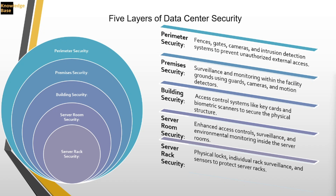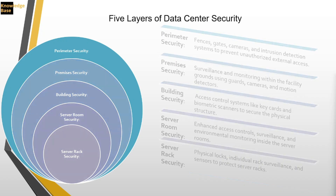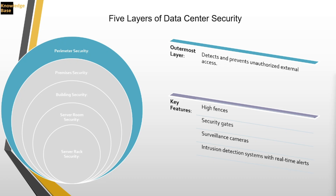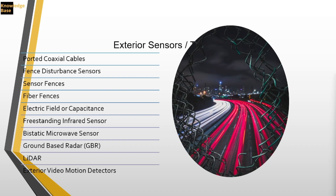As I go through these layers, I'll look at technologies available today to help secure data center access from a surveillance perspective. Starting with perimeter security — the outermost layer — it detects movement around the facility and includes fences, gates, cameras, and intrusion detection systems. There is a lot of technology available, from LiDAR to fiber fencing to sensor fences.